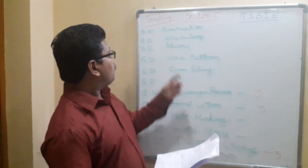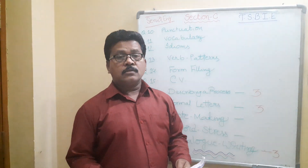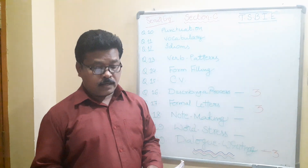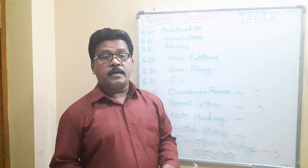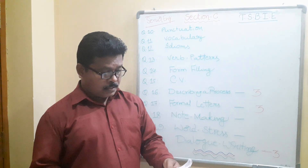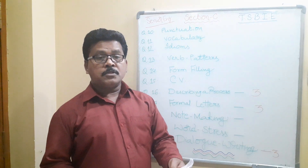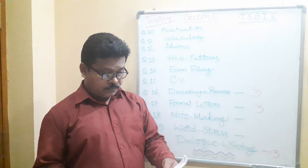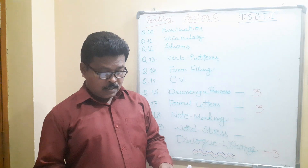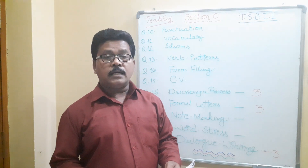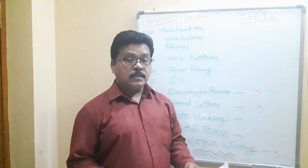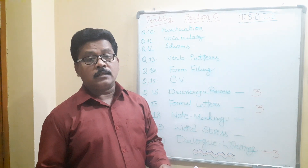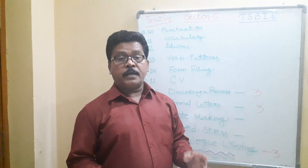We are going to discuss from question number 10 onwards. The first question, number 10, is punctuation, given at the end of the first three prose lessons. Dancing in the Rain — page number 10, Opportunities for Youth — page number 77, To Serve with Love — page number 121, and general exercises on pages 32 and 33. These are very important. I will do a separate video on punctuation, please watch it.